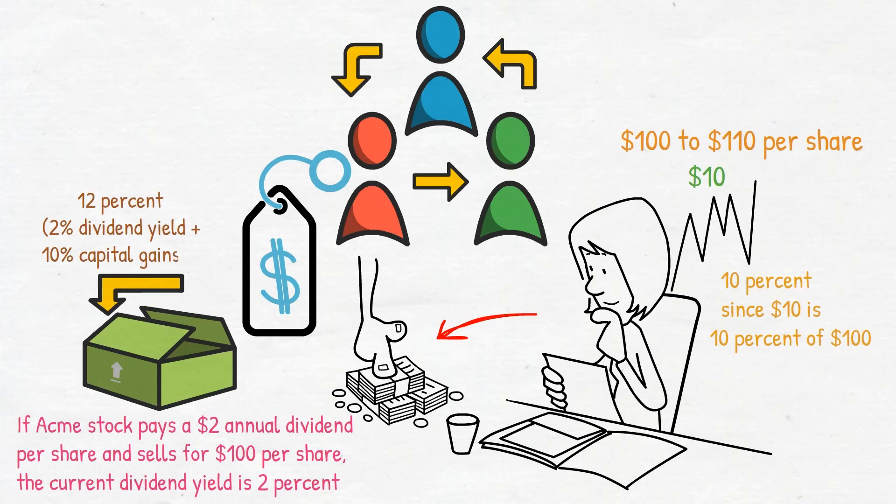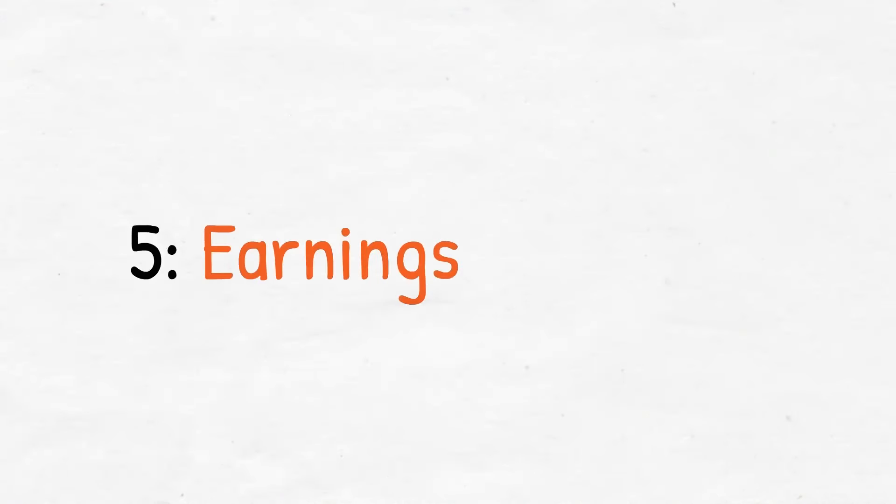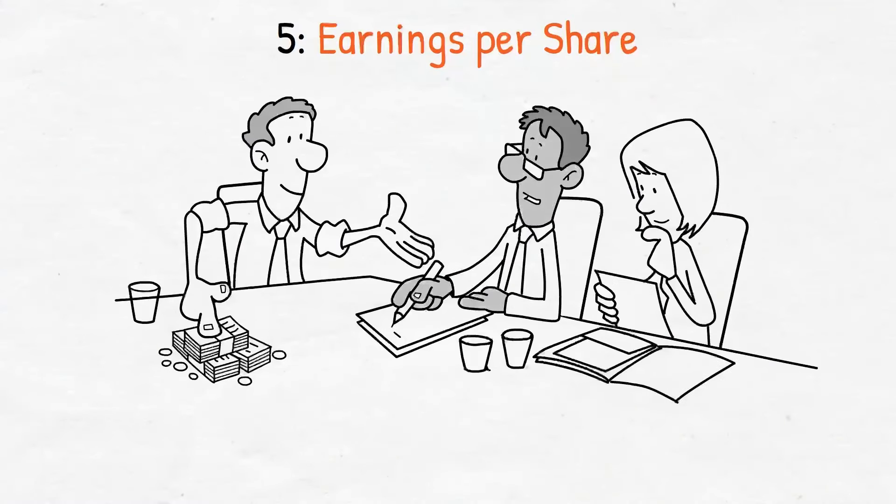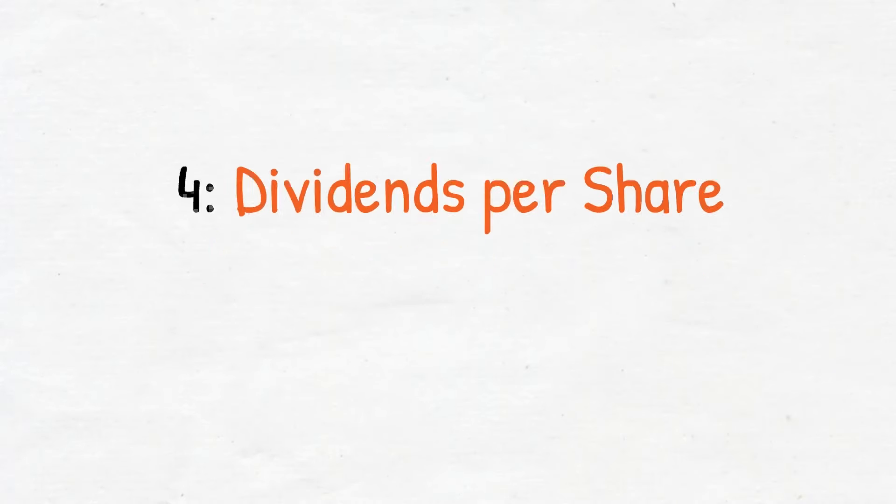Number five: earnings per share. A company's earnings per share can be calculated by dividing its total earnings by the total number of shares outstanding. Number four: dividends per share.